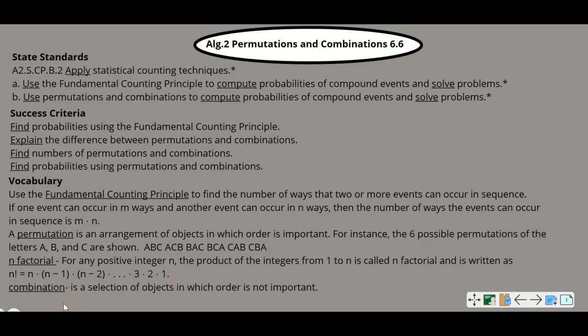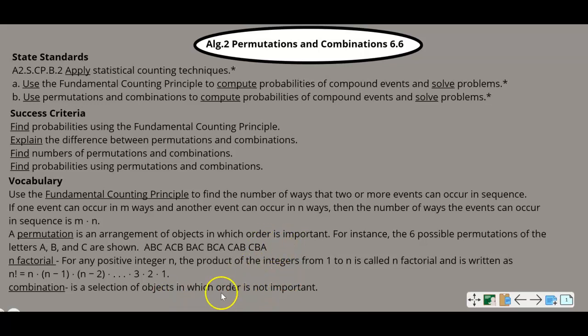Combination is your last vocabulary word — a selection of objects in which order is not important. So permutation: order is important. Combination: order is not important.